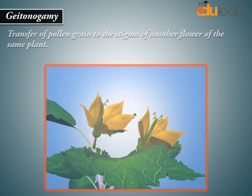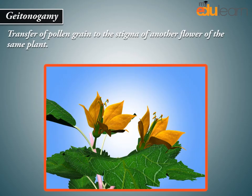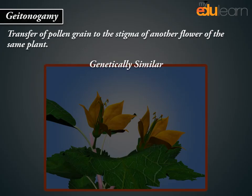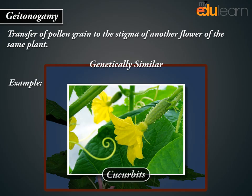Geitonogamy is the transfer of pollen grains to the stigma of another flower of the same plant. The pollen is genetically similar. Example: Cucurbits.